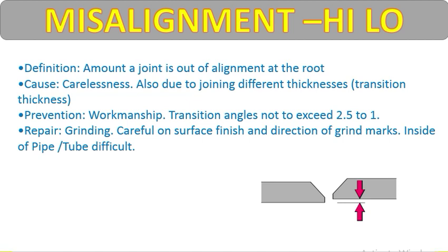Repair for misalignment: grind carefully on surface finish and direction. Avoid grind marks inside a pipe or tube, as this is difficult to correct. If misalignment is found at the alignment stage, remove all tacks, redo the alignment, and then re-weld. If welding is finished, grind the area smoothly, because if the surface is not smooth, stress concentration will generate and cause cracking.